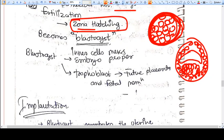Inner cell mass makes the embryo and the baby. Trophoblast will make the placenta and fetal membranes.